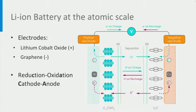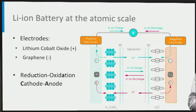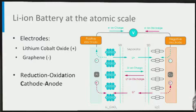This driving force will cause the battery to discharge spontaneously, but only if the lithium ions are allowed to move through the electrolyte from the negative to the positive electrode. The electrolyte only allows passage of lithium ions — positively charged lithium. Therefore, discharging requires the electrons to go through the external circuit.